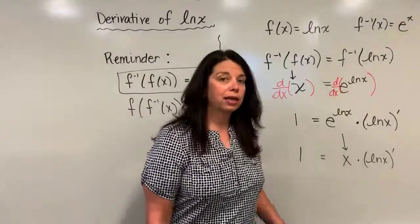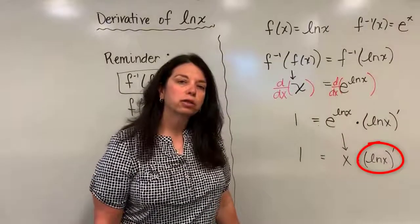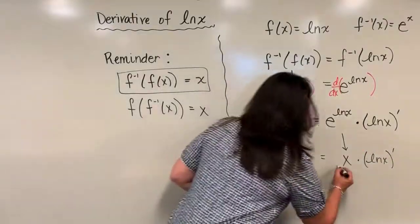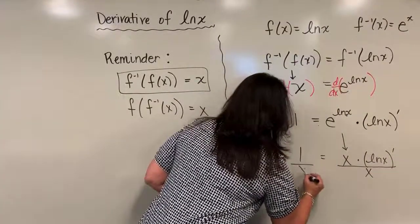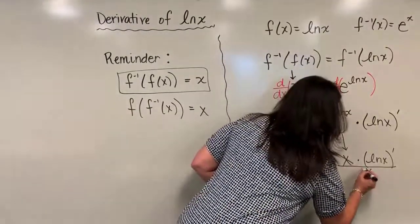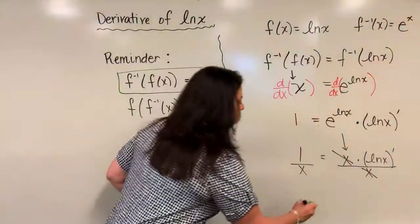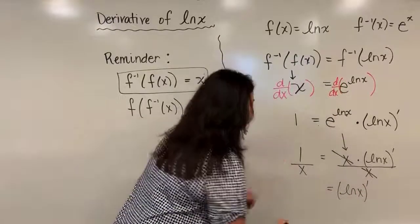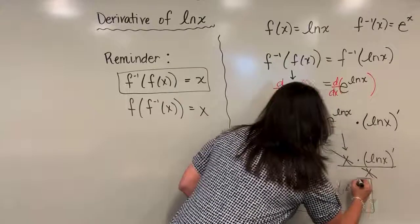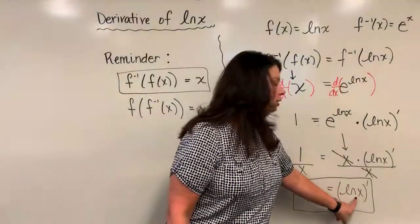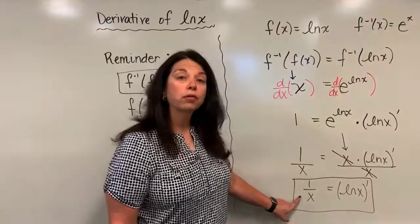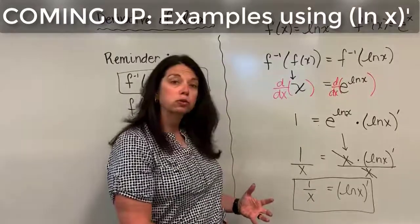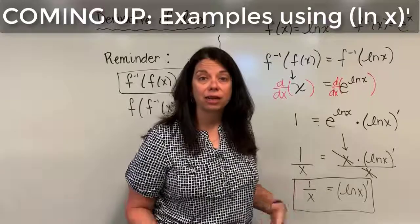Since the derivative of natural log x is being multiplied by x, I can divide both sides by x. The x's cancel on the right, and what results is: the derivative of natural log x equals 1 over x. That's our rule — whenever we find the derivative of natural log x, it's always 1/x. In the next video, we'll look at an example of how this rule gets applied when finding derivatives involving natural log x.